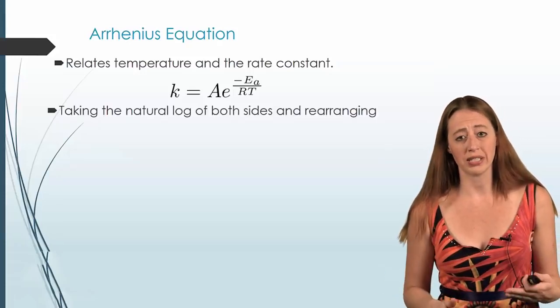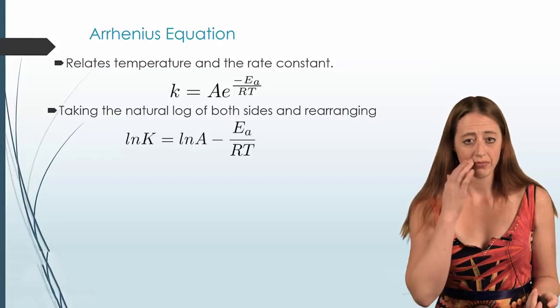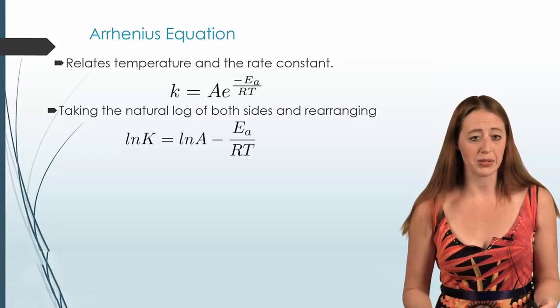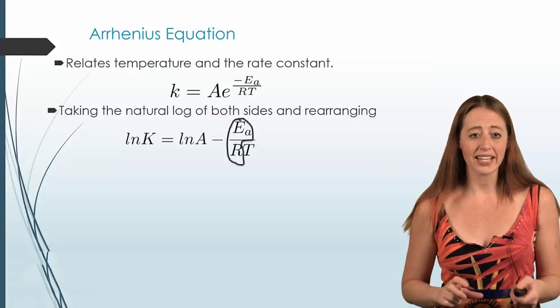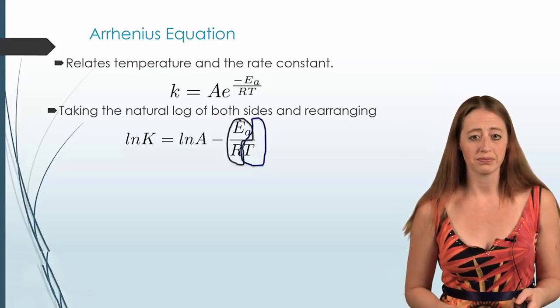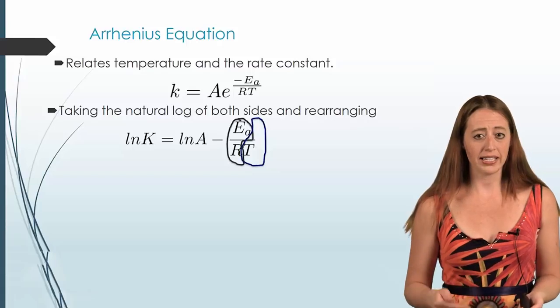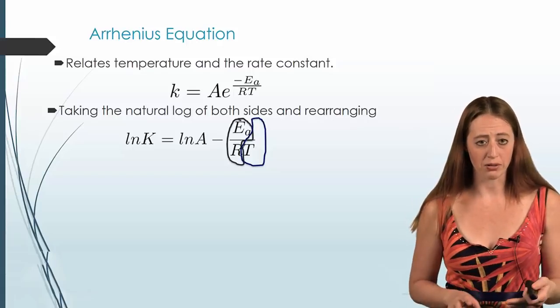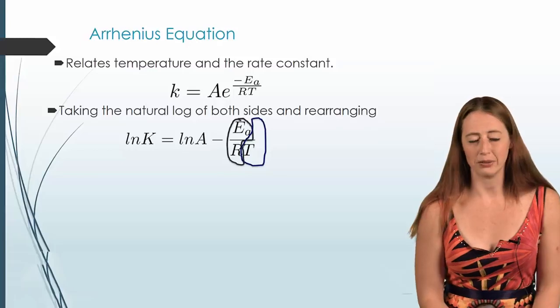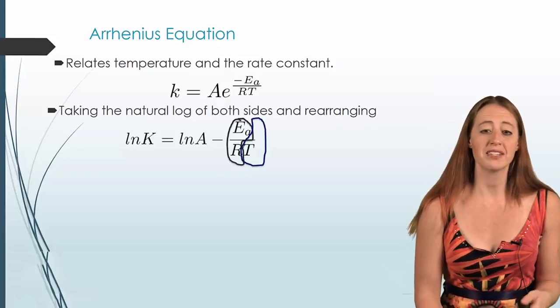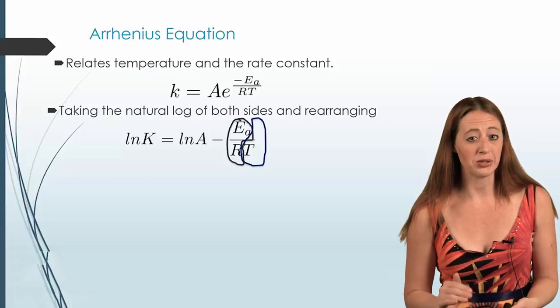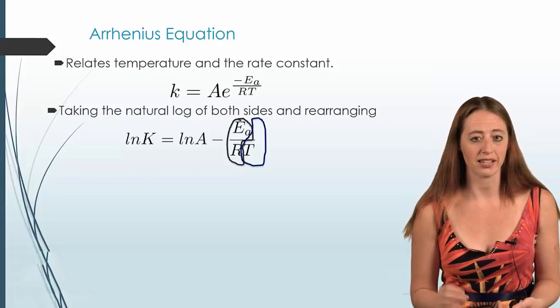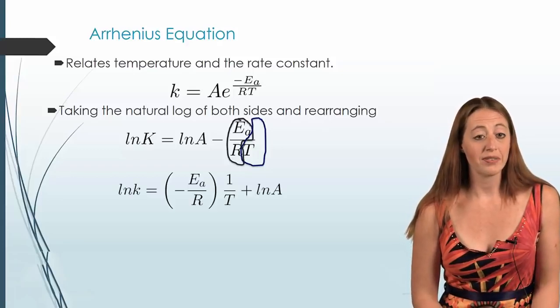So we can play around with a little bit of algebra here. We can take the natural log of both sides. And now we're going to take and separate these two things out. We have EA over R, I'm going to pull that out, and I'm going to pull out one over T. You may say, why am I doing this? I'm doing this to separate out our variables and to show you something very useful about what a graph of this looks like.